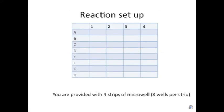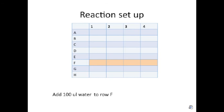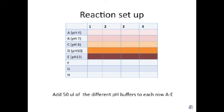You will be carrying out this experiment in a microtiter plate and you will be setting up the reaction as indicated here. First, you will be putting the enzyme in all the columns indicated — columns 1, 2, and 4, and rows A to E. In row F, instead, you will be putting just water, which will act as a blank.